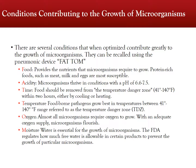Microorganisms can grow readily under certain conditions that can be summed up using the mnemonic device FAT TOM. First is food, referring to the nutrients the food product itself can provide to a microorganism. Protein-rich foods, such as meat or milk, have a lot of nutrients that can nourish growing microorganisms. Next is acidity — microorganisms thrive in conditions between 6.6 and 7.5 pH, and foods within this pH range are particularly susceptible to microorganism growth.